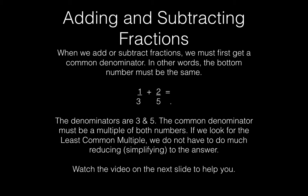So if we have 1/3 plus 2/5, the denominators are 3 and 5. The common denominator must be a multiple of both numbers. And you've been working on multiples. If we look for the least common multiple, we do not have to do much reducing or simplifying to the answer. So watch the video on my next slide to help you.